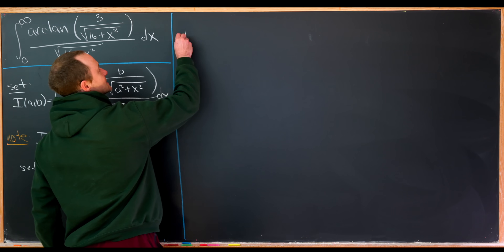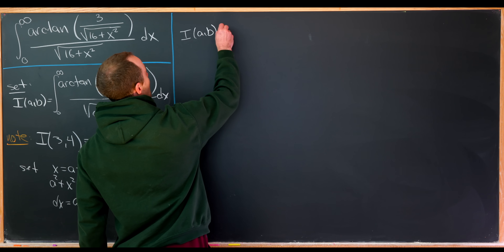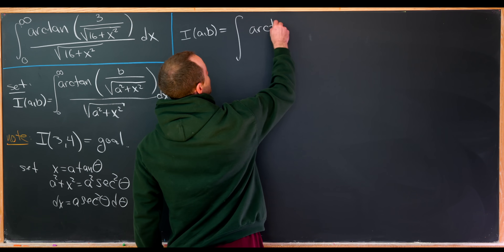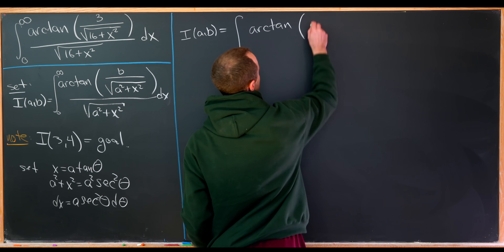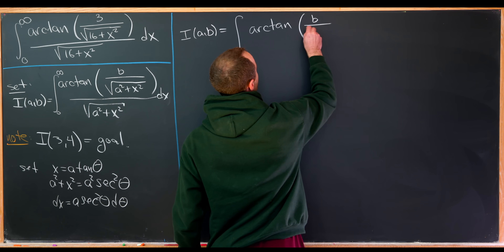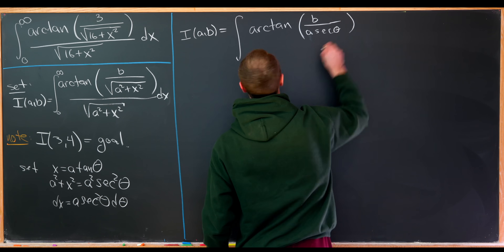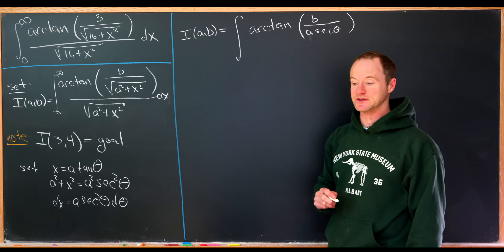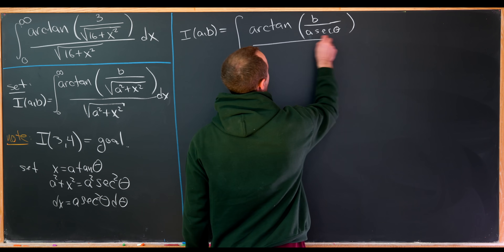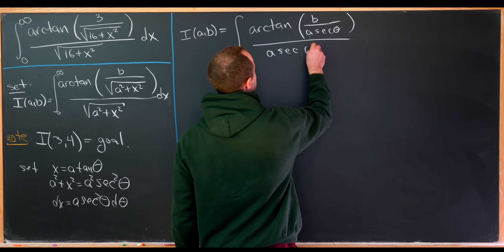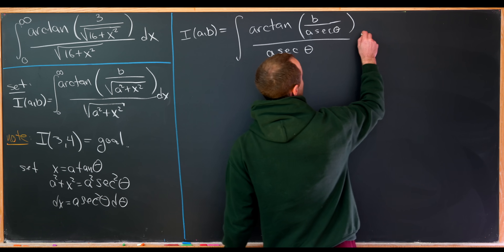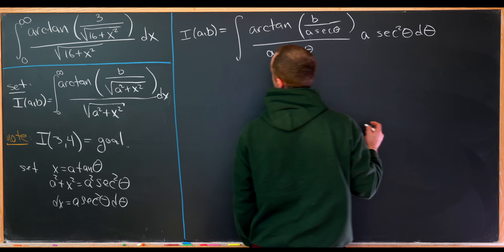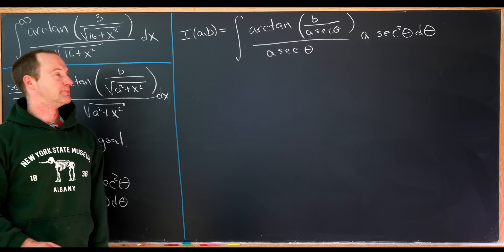Our family of integrals I(a,b) can be transformed into the integral of the arctan of b over a times secant theta. Taking the square root of a squared secant squared theta gives a times secant theta in the denominator, and then our dx term is a times secant squared theta d theta. We also need to change the bounds of integration.